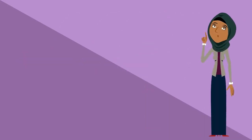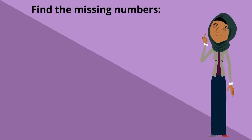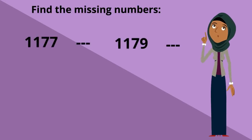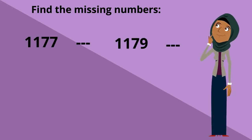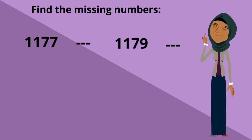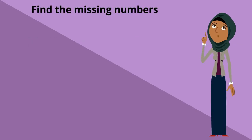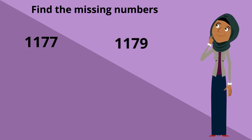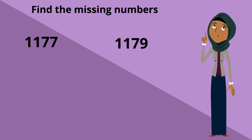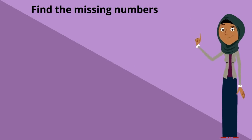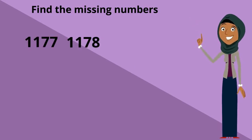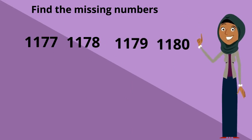Have a look here and see if you can find the missing numbers. 1,177 and 1,179 — but there are two numbers missing in between. What's between 1,177 and 1,179? What's between 7 and 9? It's 8, right? So it's 1,178. And what comes after 1,179? What's after 79? It's 80, right? So it's 1,189.